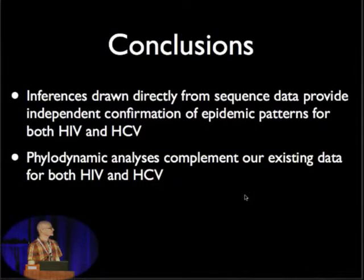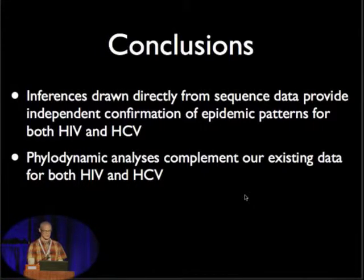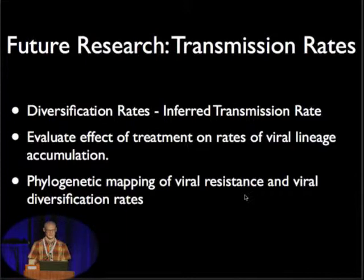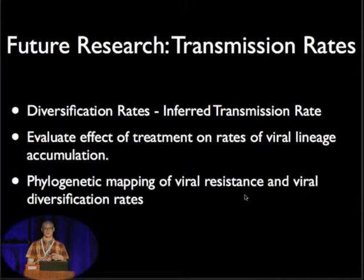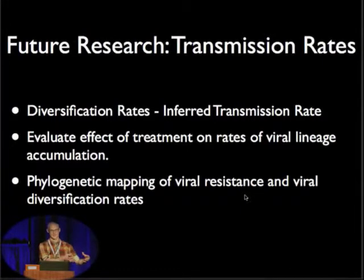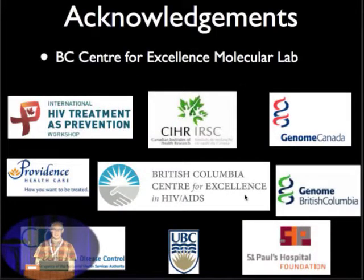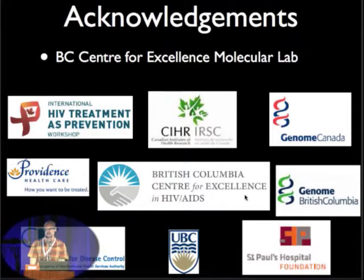In conclusion, inferences drawn directly from sequence data provide independent confirmation of epidemic patterns for both HIV and HCV. These phylodynamic analyses complement our existing epidemiological data. Future work will focus on diversification rates—which can be thought of as inferred transmission rates—evaluating the effect of treatment on viral lineage accumulation rates, and mapping quantities like drug resistance to compare with how diversification rates map on the landscape, potentially identifying areas of high viral diversification rate that are also areas of high resistance. Thank you.